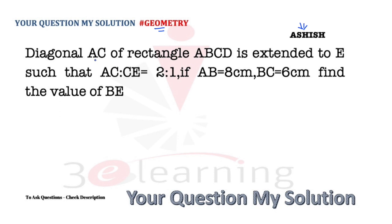...it will be very easy for you. So we have a rectangle ABCD. Let's draw ABCD, a rectangle. The figure is not to scale. AB is 8 cm, BC is 6 cm. So by Pythagoras theorem, AC is 10 cm. AC:CE equals 2:1, so if you extend it to E, CE will be 5 cm.